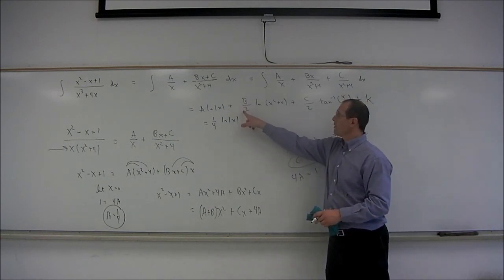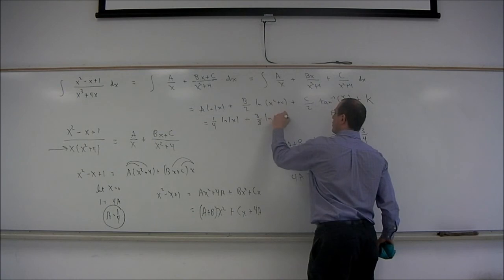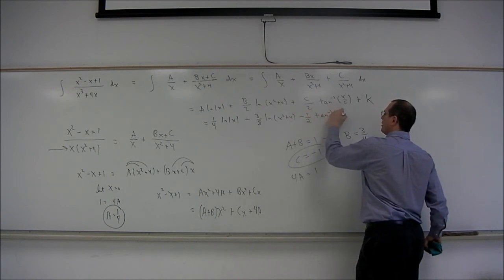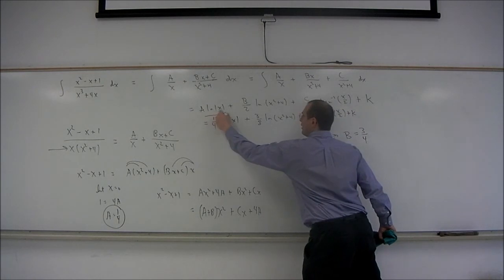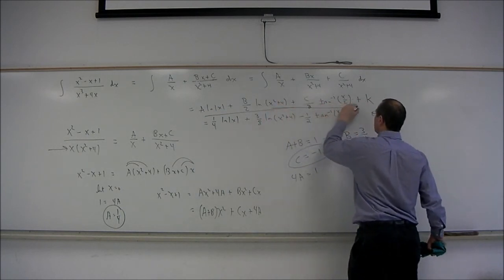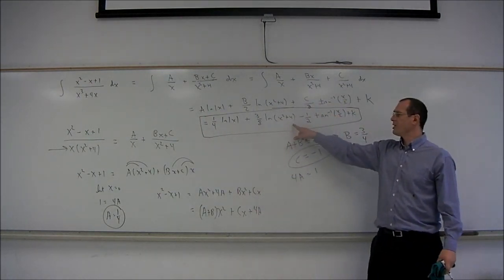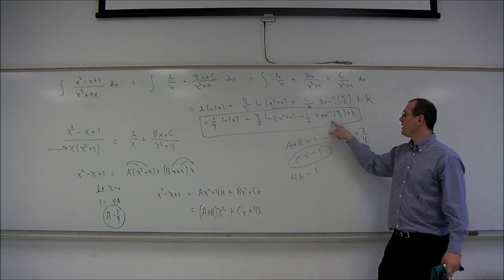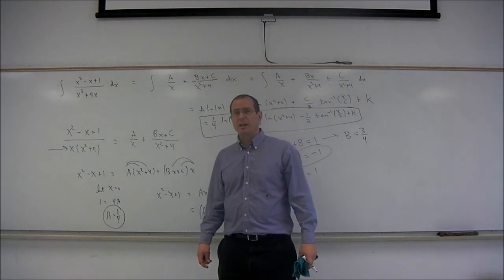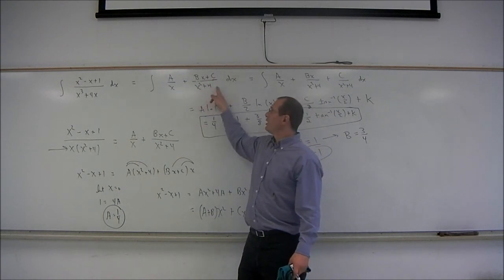So B is 3/4, meaning B over 2 is 3/8. And C is negative 1, so the last term becomes minus 1/2 times the inverse tangent of x over 2 plus a constant. The final answer is 1/4 log of absolute value of x, plus 3/8 log of x squared plus 4, minus 1/2 times the inverse tangent of x over 2, plus a constant. That's a look at integrating a rational function using partial fraction decomposition with an irreducible quadratic factor in the denominator.